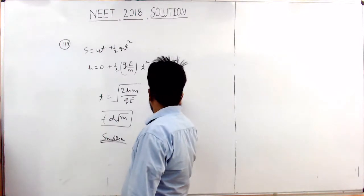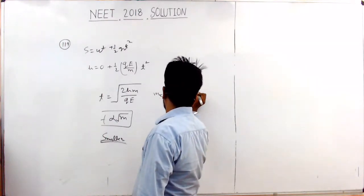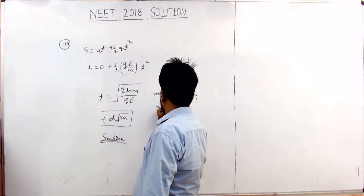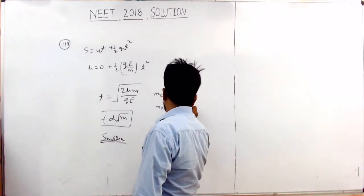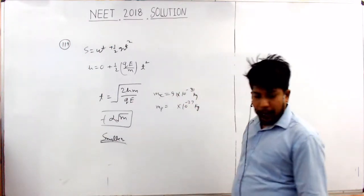Mass of electron is 9.1 times 10^-31 kg. Mass of proton is in the range of 10^-27 kg.